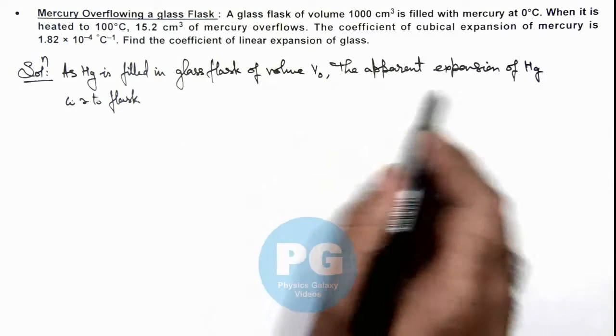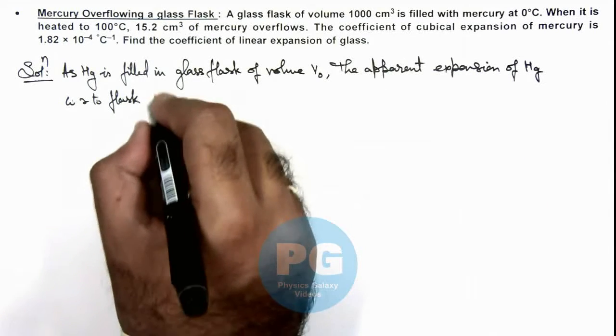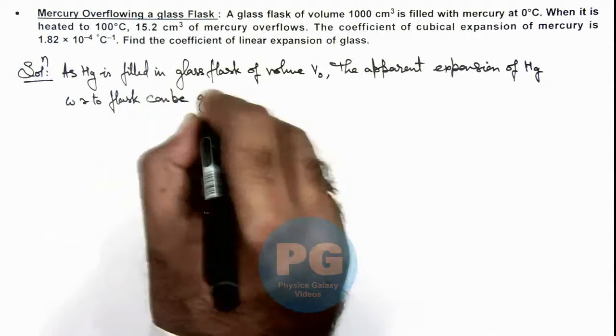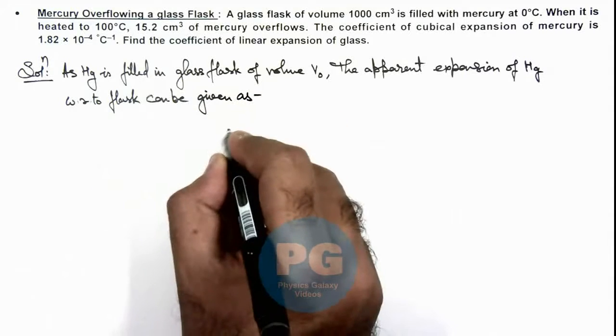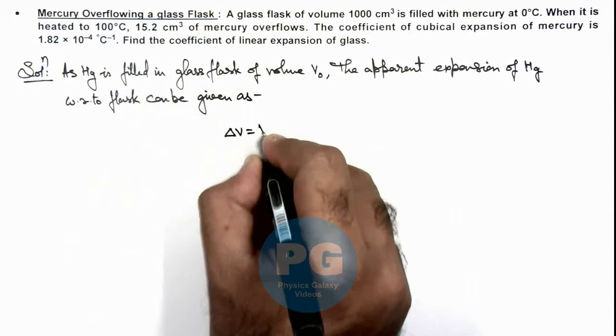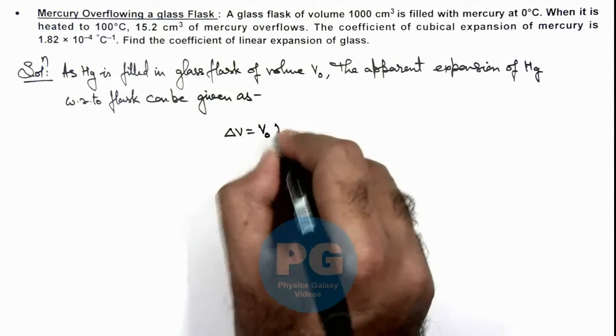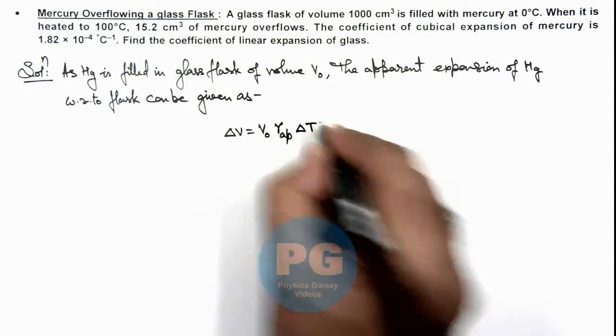The apparent expansion of mercury with respect to flask can be given as: ΔV = V₀ × γ_apparent × ΔT.